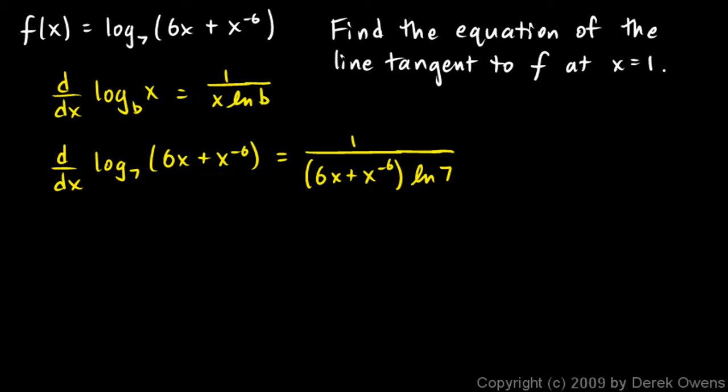So we can differentiate this right here just with the power rule, and that's fairly easy to do. The derivative of this thing inside the parenthesis will be 6 plus negative 6x to the negative 7, just applying the power rule to each term.